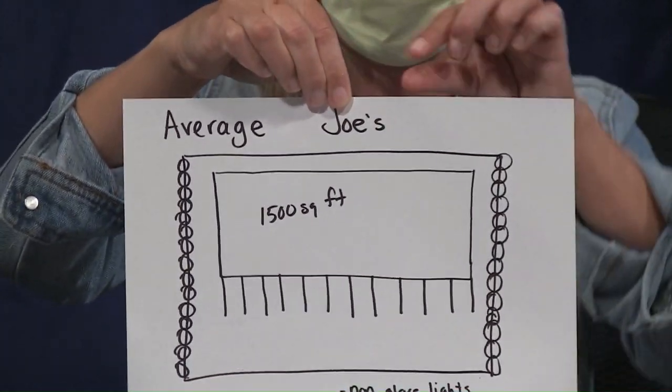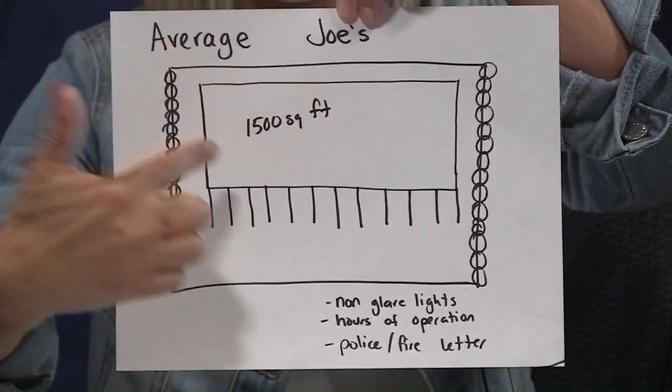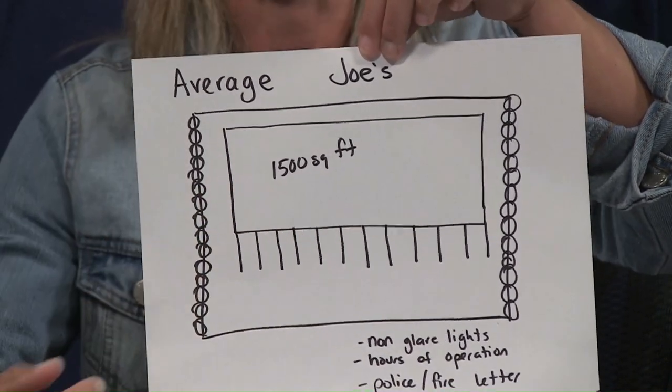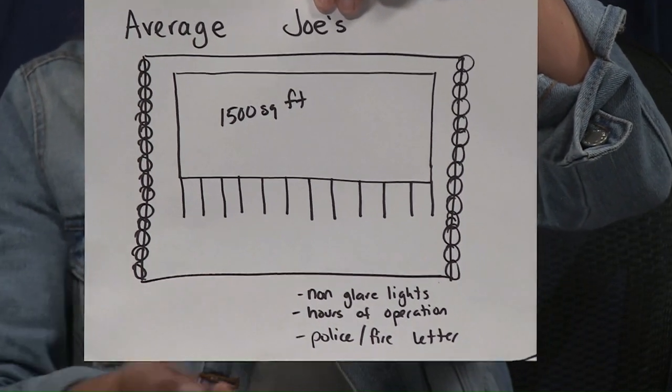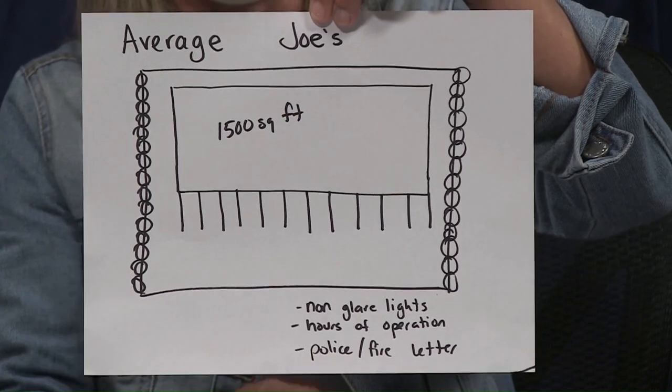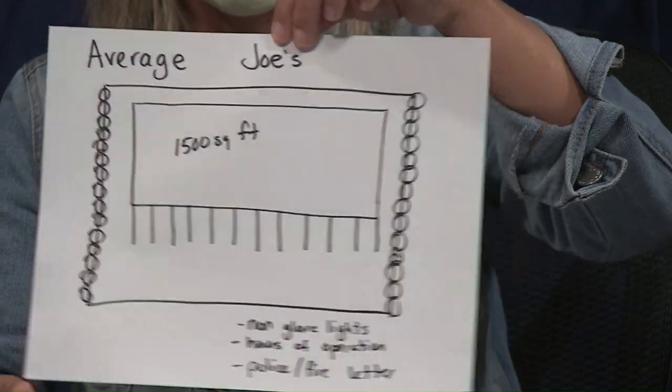Usually at that meeting or the next meeting, Joe would get final approval. In the end we have Average Joe's convenience store — built within his setbacks, with 1,500 square feet of space, 11 parking spaces with only 10 required, and a buffer on the sides from the neighbors as required. Conditions the planning board may put on the application can be anything from not wanting trash stored outside to restricting hours of operation — they have to be within reason, but the planning board has a broad scope of what conditions it can apply.